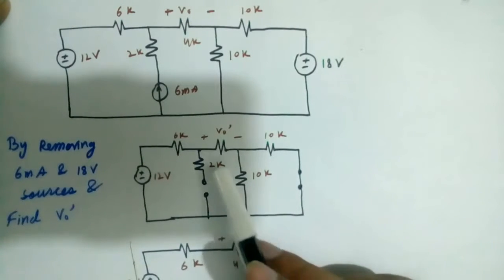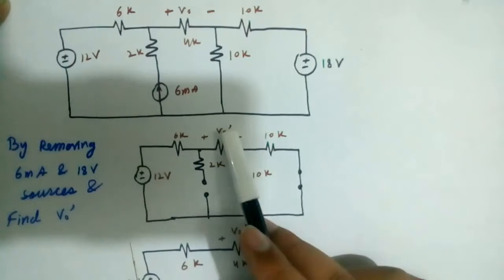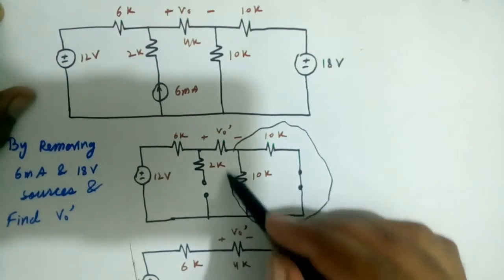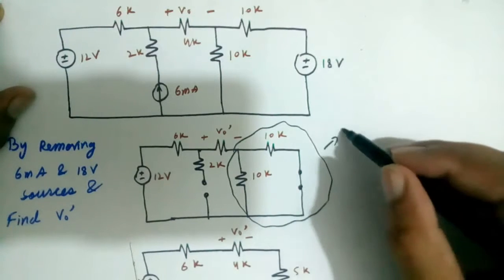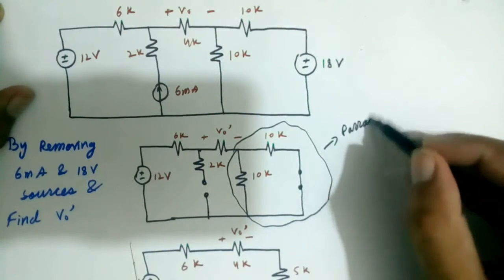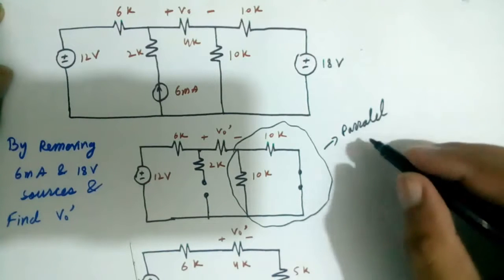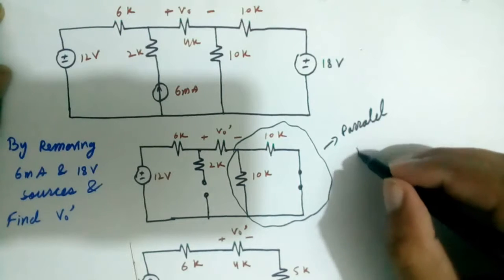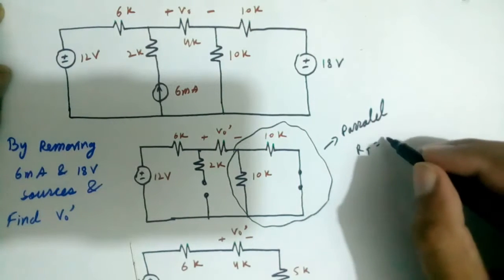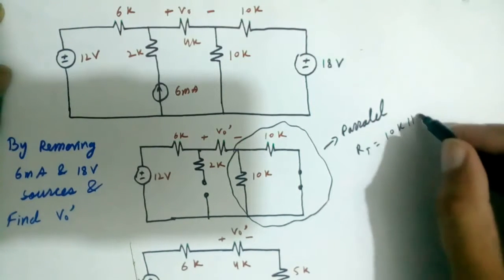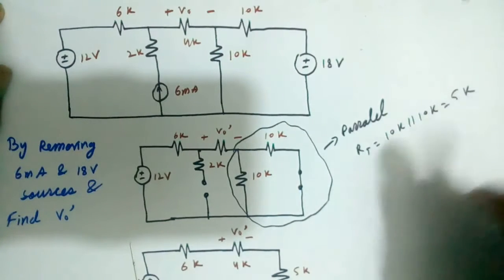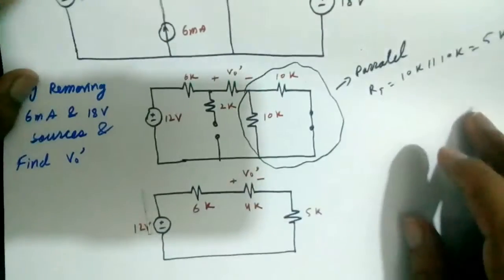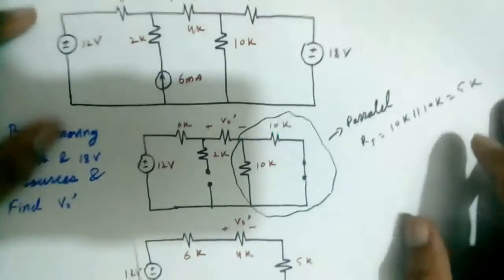We want to find V0. We know these two resistors are parallel. Applying the parallel combination of 10K and 10K, the equivalent resistance is 5K. So the simplified circuit is there.